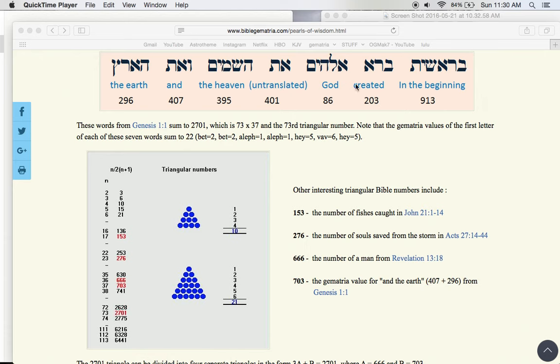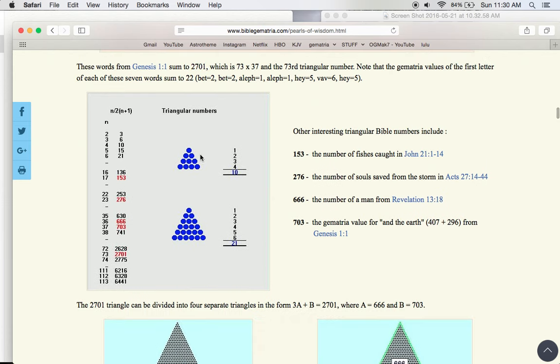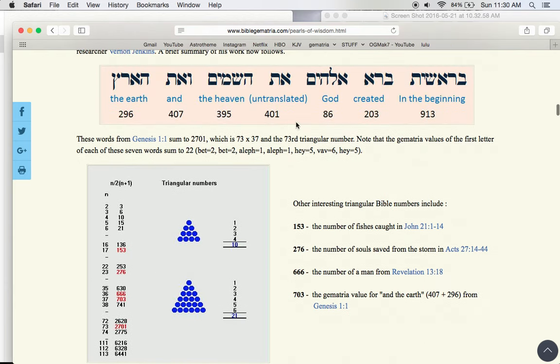We all know the first verse of the Bible, but it adds up to 2701, which is 37 times 73, and the 73rd triangular number. If you see right here, you just add a pyramid, and that's called a triangle number. So 2701 happens to be one. If it was 2700, it wouldn't be triangular.